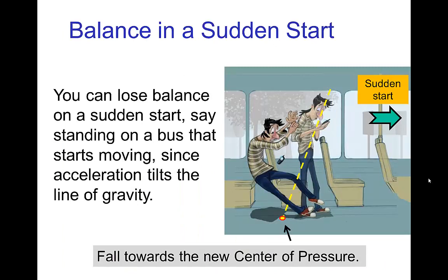Another example: let's say you're standing on a bus that's not moving, and suddenly the bus starts moving forward — it accelerates towards screen right. The character was in a pose that was originally in balance when the bus was not moving, but now loses balance because the line of gravity has tilted. The center of pressure is now back behind the character, no longer under the base of support around the feet. When the bus accelerates, the character is out of balance and falls towards the center of pressure.